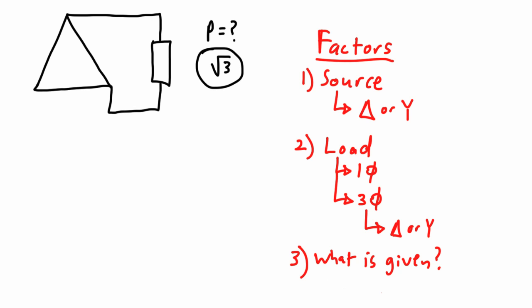Now let's identify the factors for our particular situation. The first factor, the source, as we've said before, is delta. So we have a delta source for number 1.